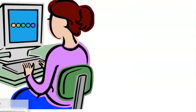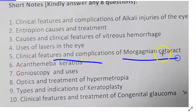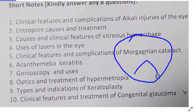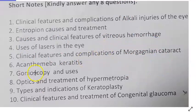The Nd:YAG laser is used in posterior capsulotomy, especially in after-cataract (posterior capsule opacification). In laser-assisted DCR, the holmium YAG laser is used. The diode laser is used in panretinal photocoagulation. Morgagnian cataract is a hypermature cataract where the nucleus has sunk because the cortex has liquefied.